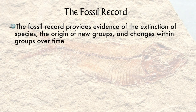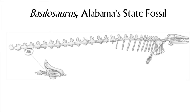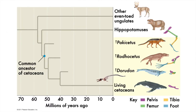Another line of evidence for evolution is one I've mentioned previously: fossils. The fossil record shows the birth and death of groups of organisms and changes within those groups. Here is Alabama's state fossil, the unfortunately named Basilosaurus. Why unfortunately named? In contrast to what was first thought, it is not a dinosaur — not at all. In fact, this is a mammal, and not just any mammal. It was an aquatic marine mammal, an ancestor of modern cetaceans — the whales and dolphins.